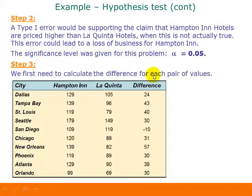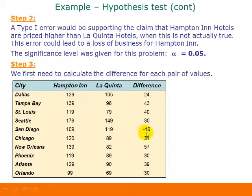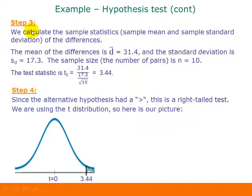Step 3: We first calculate the difference for each pair — Hampton Inn price minus La Quinta price. Note that when Hampton Inn was actually cheaper than La Quinta in a city, the difference is negative. After computing all differences, we find the sample mean and sample standard deviation of that column of differences.